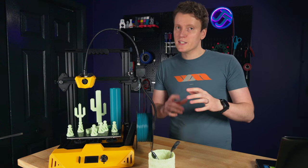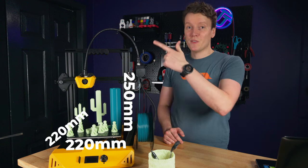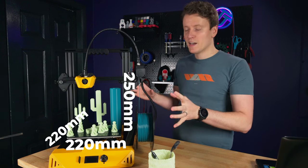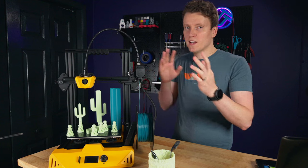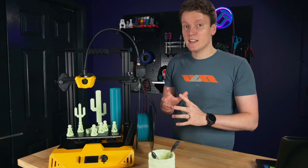First off, you got the build volume, pretty standard, 220 millimeters by 220 millimeters by 250 millimeters tall. There's a lot of printers that fit that range. That's the Prusa, Ender 3, all falls in that category, and a lot of things can be printed in that size.